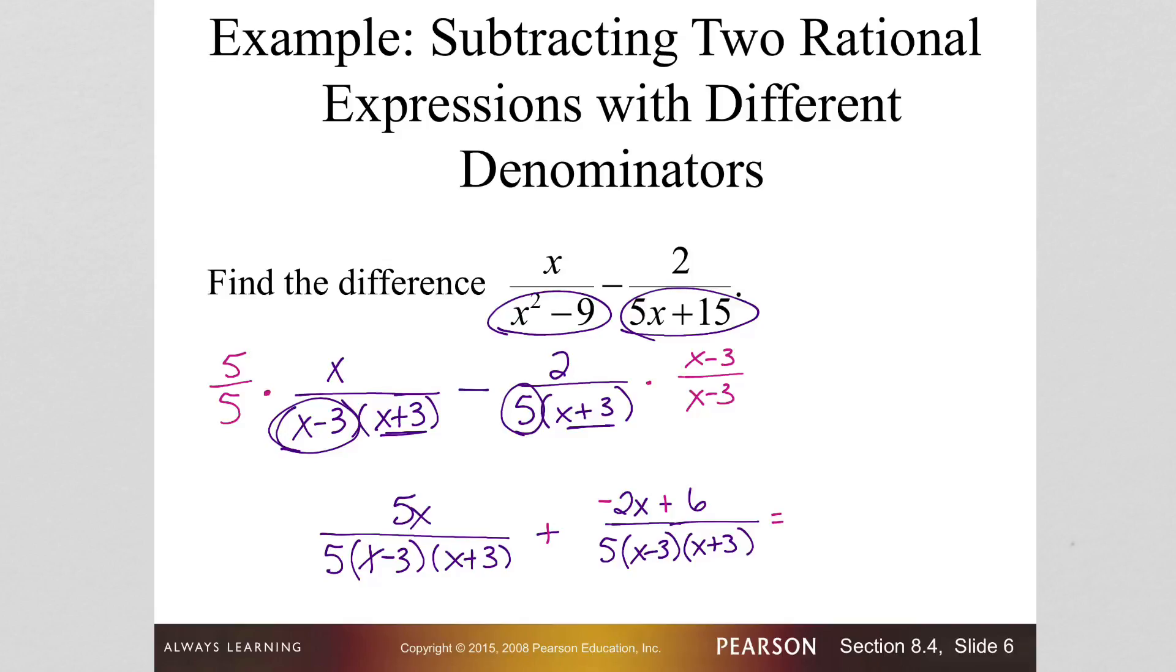So now we will get 5x plus negative 2x, which is 3x, and I don't have anything to combine with that 6, so 3x plus 6 over 5 times x minus 3, x plus 3.